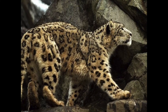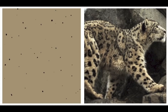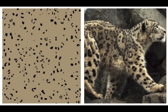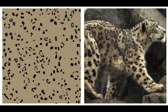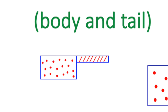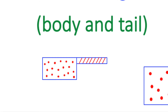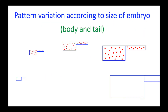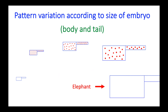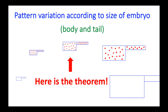Here is an animation of these equations. But why a spotted body with a striped tail but never the opposite? Because the pattern depends strongly on the size and shape of the embryo: nothing, only striped, spotted body with striped tail, only spots, nothing. So here is the theorem.